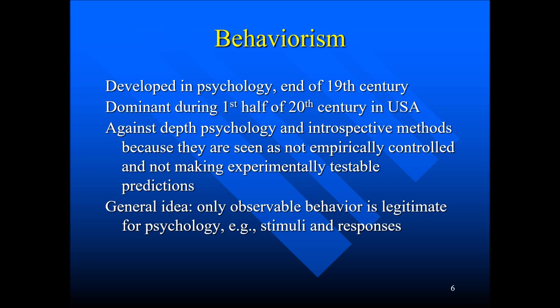That sounds pretty restricted, but the idea was: if you want to scientifically control what you are claiming in a science, then you must have observational control, and observational control in psychology is stimuli and responses. That was the dominant position in psychology, especially in the United States, for the first half of the 20th century. It's very important to understand this if you want to understand the social sciences in Anglo-Saxon countries in the first half of the 20th century.